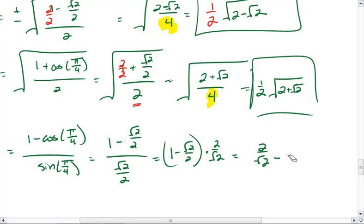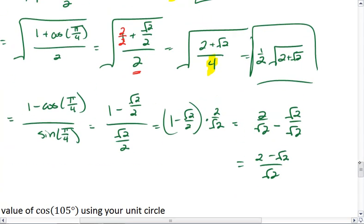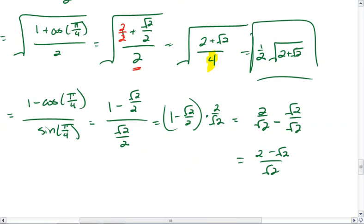If I want to rationalize that denominator, first of all, I want to combine our fractions. So I get 2 minus root 2 over root 2. I want to rationalize that denominator, so I multiply through by root 2 over root 2. I get 2 root 2 minus 2 all over 2.